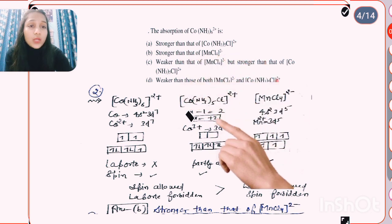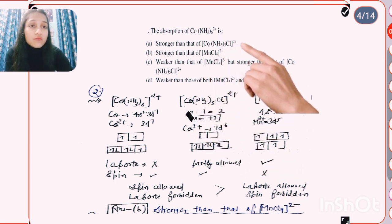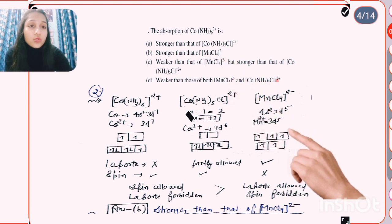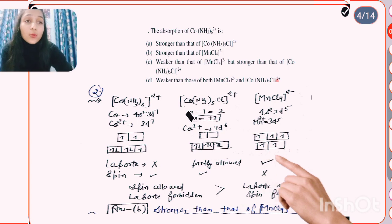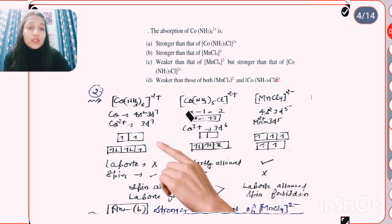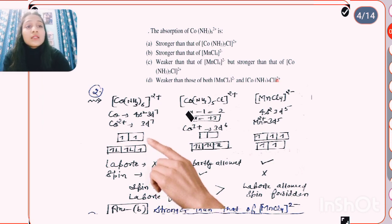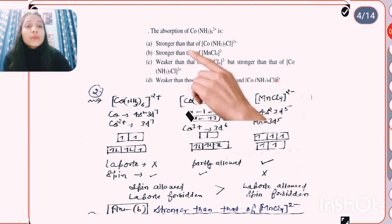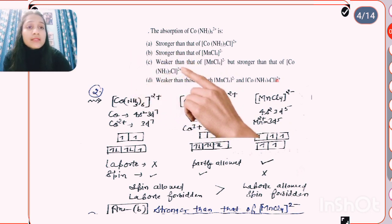The absorption of Co(NH3)6 3+ is stronger than Co(NH3)6 2+ because Co3+ is Laporte partially allowed and spin allowed, while Co2+ is Laporte forbidden. Comparing Co(NH3)6 with MnCl4 2-: MnCl4 is Laporte partially allowed but spin forbidden, while Co(NH3)6 is spin allowed — since spin is preferred over Laporte, Co(NH3)6 shows stronger absorption. The correct answer is B: stronger than that of MnCl4 2-.